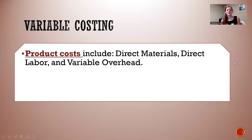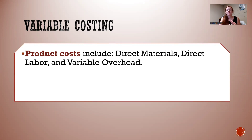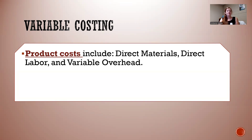With variable costing, we have the product cost — the cost that it takes to create inventory in a manufacturing company — which would include direct materials, direct labor, and variable overhead. So under variable costing, we're only putting the variable overhead as an inventory or product cost.